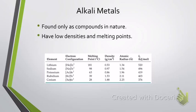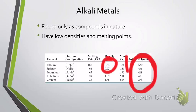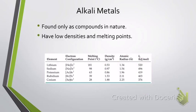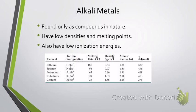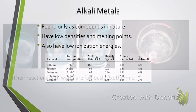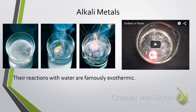They do tend to have low densities and melting points. For example, the densities of lithium and sodium are both less than 1. Water's density is approximately 1 gram per centimeter cubed, so lithium would, in theory, float on top of water. They tend to have smaller atomic radii, and their ionization energies are actually quite low — the reason being that they like to look like noble gases, so they tend to lose that one electron to become a +1 charge. Their reactions are famously exothermic, meaning they give off a lot of heat.